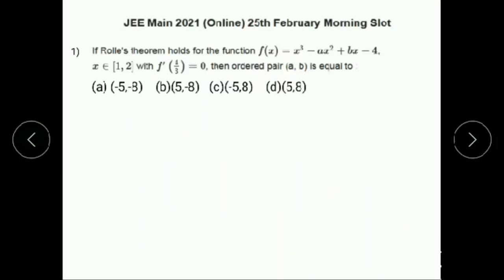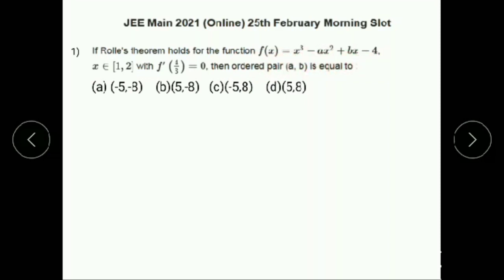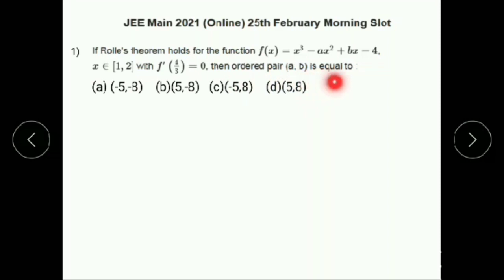First question: if Rolle's theorem holds for the function f(x) = x³ - ax² + bx - 4, where x belongs to [1, 2], with f'(4/3) = 0, then the ordered pair (a, b) is equal to?